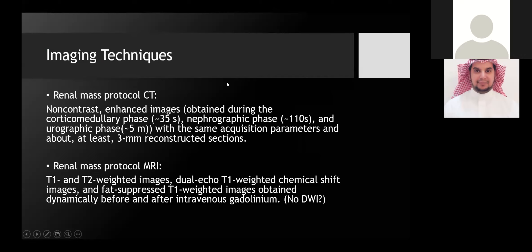Moving on to imaging techniques: the renal mass protocol should include pre-contrast and enhanced images in at least three phases — corticomedullary phase at 35 seconds, nephrographic phase at 110 seconds, and urographic phase at approximately five minutes. Reconstructed images should be at least three millimeters in thickness.